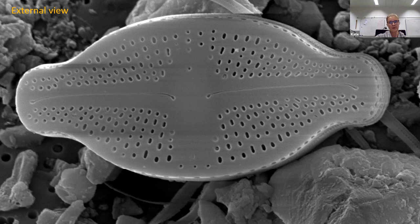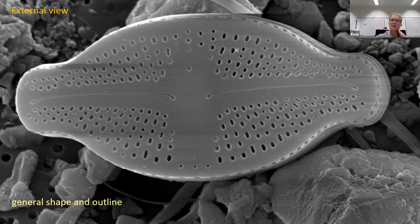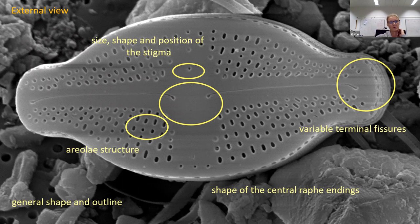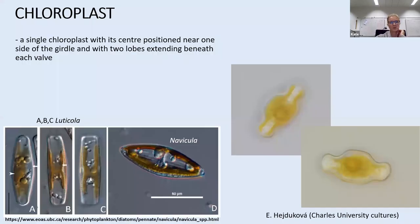To simply conclude the morphology: general shape and outline is an important feature, as is size, shape, and position of the stigma, and the shape of the central raphe endings and the central area itself, as well as the variable raphe endings, the structure of the areolae, and the number of areolae per 10 micrometers.